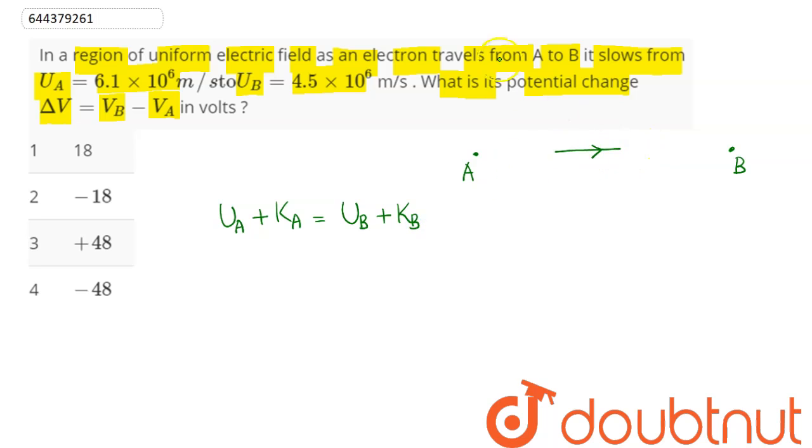The electron is moving from A to B. So we can say the potential at point A is Va, so potential energy at point A on the electron will be -e × Va. Kinetic energy at A is ½m × ua².